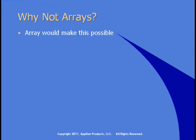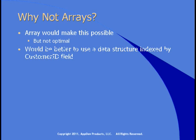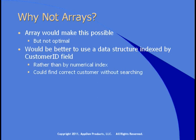Array would make this possible, but it's not optimal. It would be better to use some data structure which was indexed by that customer ID field, rather than by some numerical index, which is all an array could ever do. You could find the correct customer without searching, without looping through all the elements.